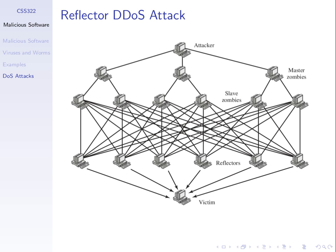The ping attack uses this reflector approach, but other protocols do as well. This is better in terms of getting more nodes involved and it's harder to trace back to the attacker because there are more steps — involving just normal computers — between the victim and the attacker. What's the disadvantage compared to a direct attack? This approach is better in terms of more nodes and harder traceability.